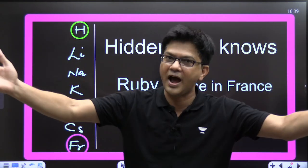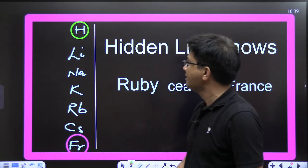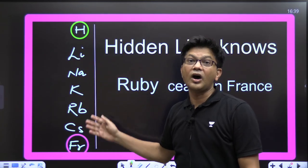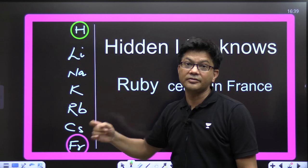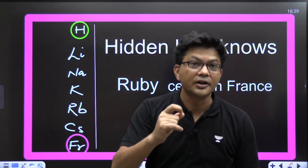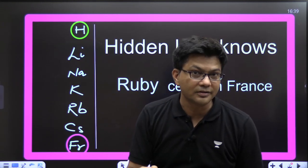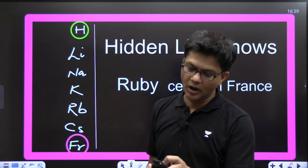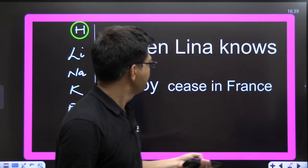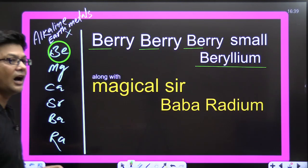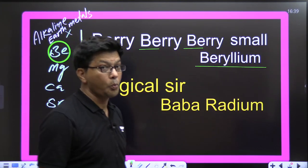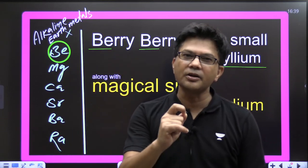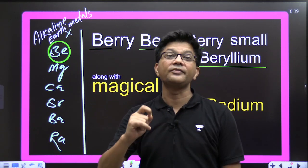All these are alkali metals — highly reactive. They are stored under kerosene because they are highly reactive with water. Now, the second group: alkaline earth metals. Beryllium is an exceptional case because beryllium is very, very small.